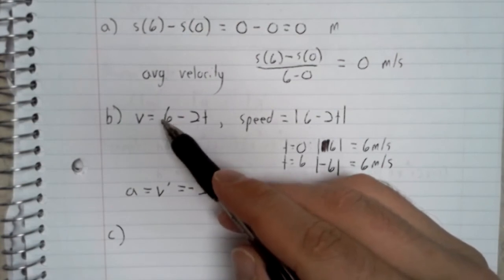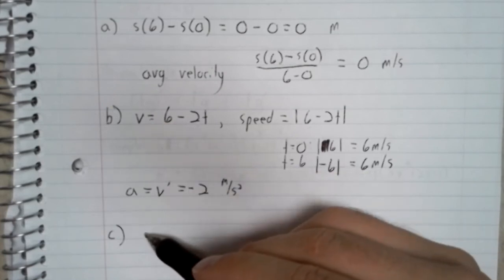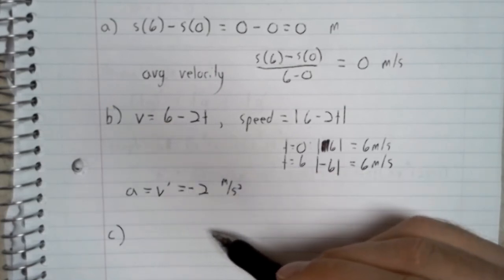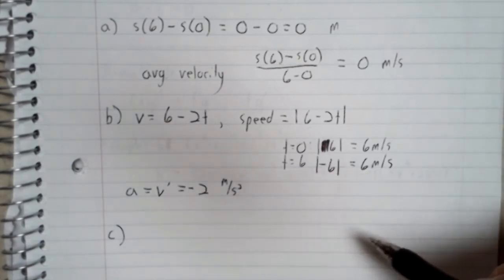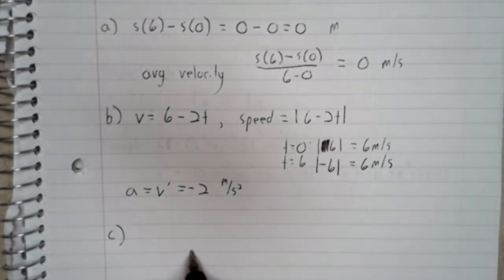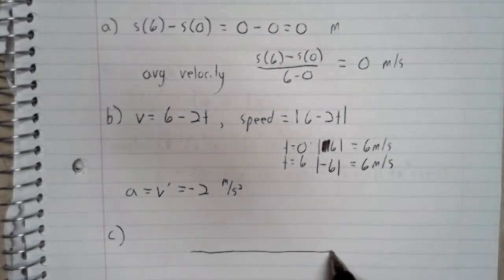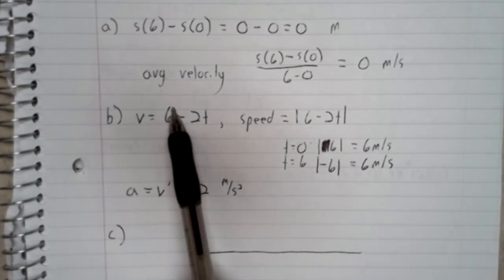So the direction depends on the velocity. If the velocity is positive, we're going in the positive direction, which, if we've got a horizontal number line, would be to the right. If the velocity is negative, we're going in the negative direction.